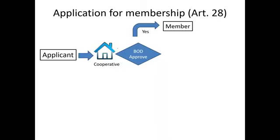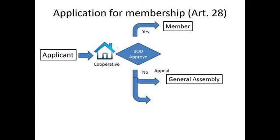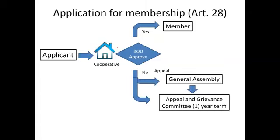If the board approves the membership, you automatically become a member, but you cannot yet exercise your rights until payment of the membership fee or contribution as determined by the bylaws. If the application is disapproved, you may appeal before the general assembly. The general assembly may create an appeal and grievance committee with a term of office of one year.